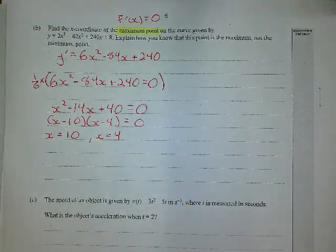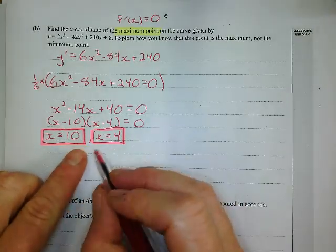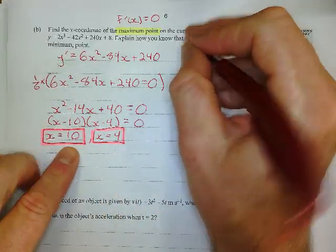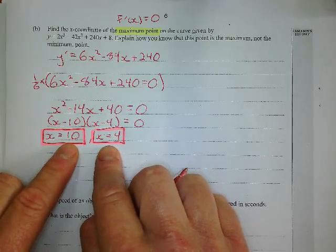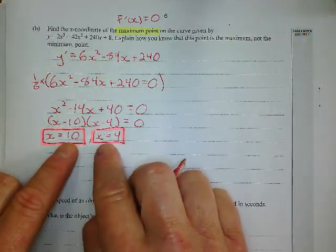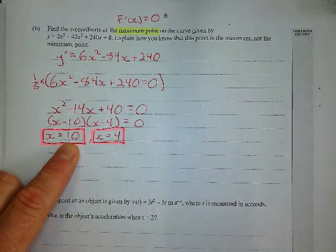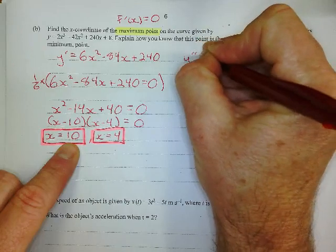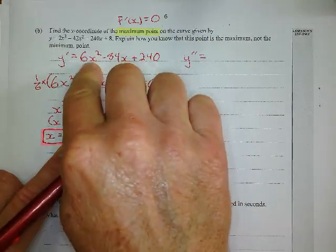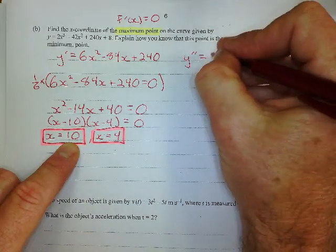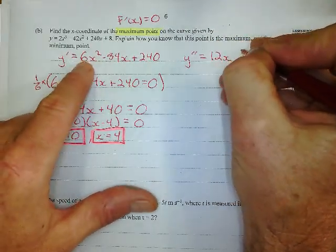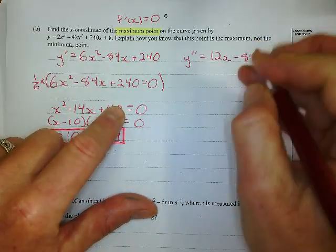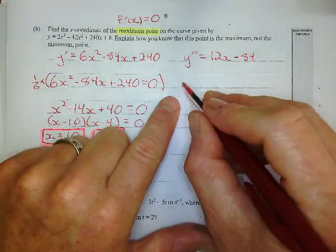That's some headway. So they're both turning points, but which one's the max, which one's the min? So here's where I do the second derivative test. In order to figure out which one is the max or min, I'm going to do the second derivative test and substitute both of these values in for x to see what's going to happen. So my second derivative, I just do the derivative of this one, of the first derivative, and I get 12x, 2 times 6 is 12, minus 84. Not 84x, just 84.